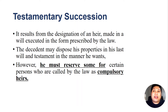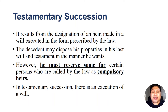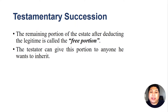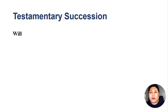From the entire estate of the deceased, there is a portion reserved strictly for the compulsory heirs — the children, the spouse, and the parents. This portion is called the legitim, and it cannot be disposed of to anyone else; it is reserved for the compulsory heirs. In testamentary succession, after deducting the legitim, the remaining portion is called the free portion, which the testator can give to anyone he wants — a brother, a friend, or a neighbor.